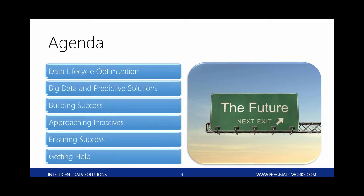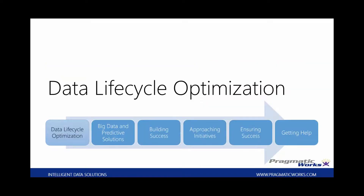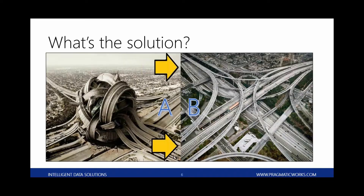Let's get started with data lifecycle optimization. Data lifecycle optimization is a process we use at Pragmatic Works that basically bridges the gap in maturity between the different areas that you're going to want to use data in. In most organizations that I've interacted with, systems are built over time.